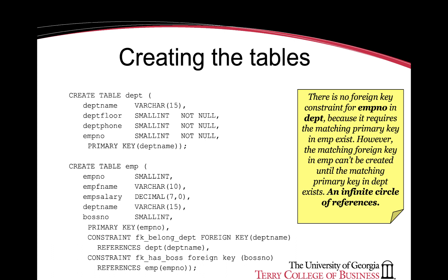The next thing to know about the CREATE TABLE department statement is that employee number is present in the department table as a foreign key, but there is no constraint on values of employee number. The reason we don't have a constraint is to avoid an infinite circle of references between the department and the employee table.